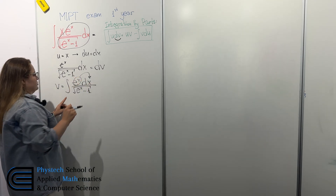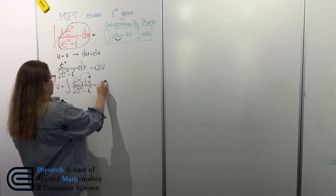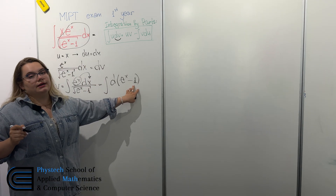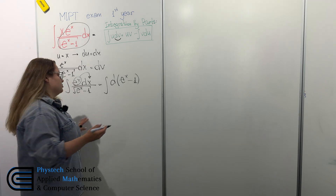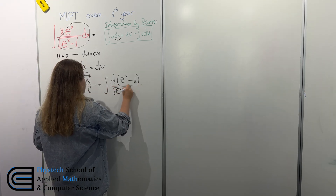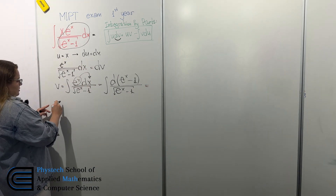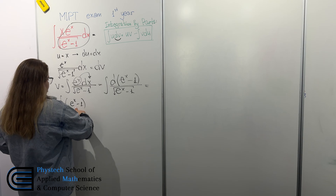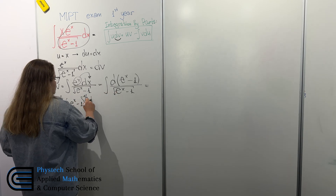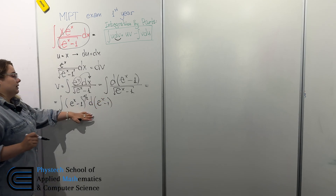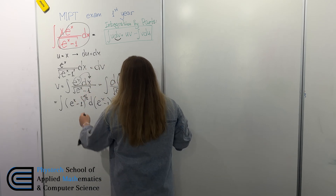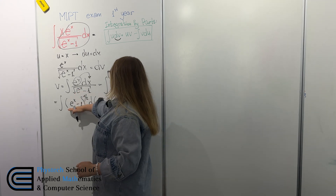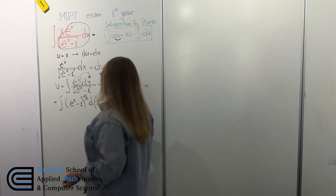We can put e to the power of x here and obtain an integral of d(eˣ minus 1). We can put minus 1 here, because the derivative of minus 1 gives us 0. We rewrite it as (eˣ minus 1) to the power of minus 1/2. Integrating gives us minus 1/2 plus 1 equals 1/2, so it is a square root, and we divide by 1/2, meaning 2 goes up. This is our v.